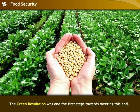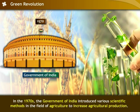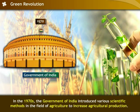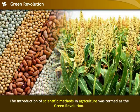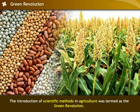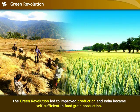The Green Revolution was one of the first steps towards meeting this end. In the 1970s, the government of India introduced various scientific methods in the field of agriculture to increase agricultural production. This introduction of scientific methods in agriculture was termed the Green Revolution, and it led to improved production, making India self-sufficient in food grain production.